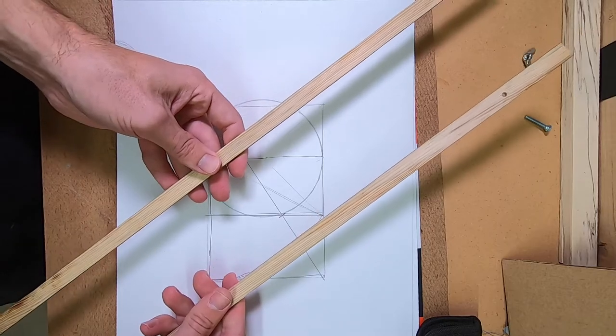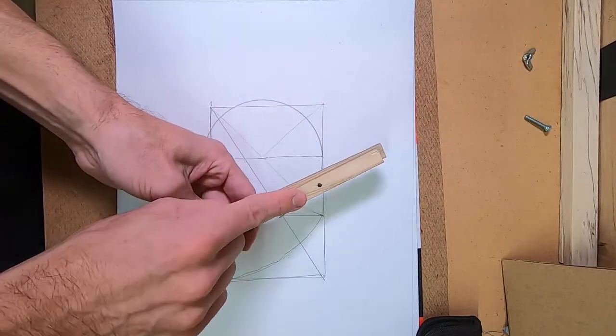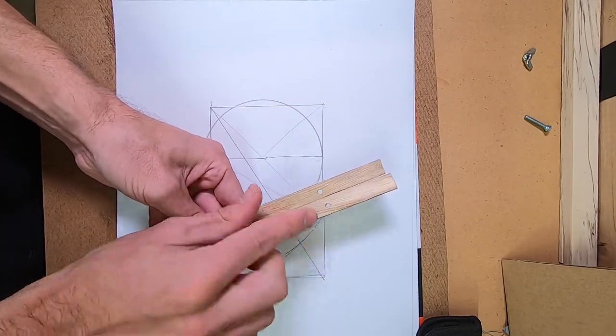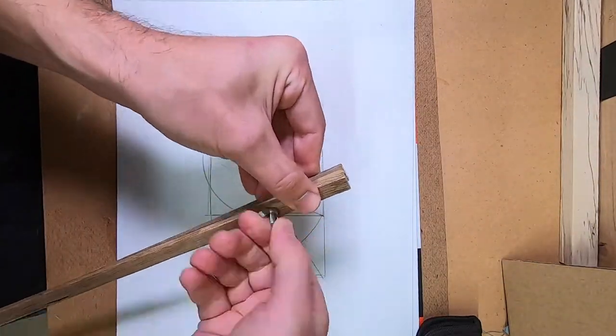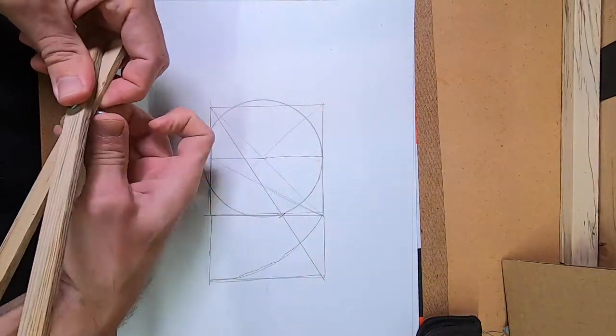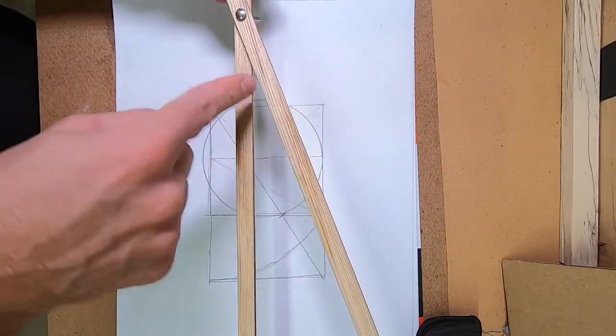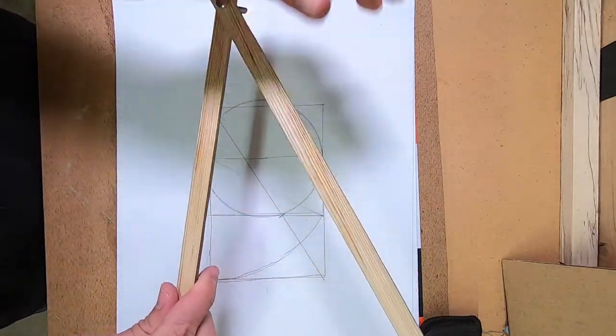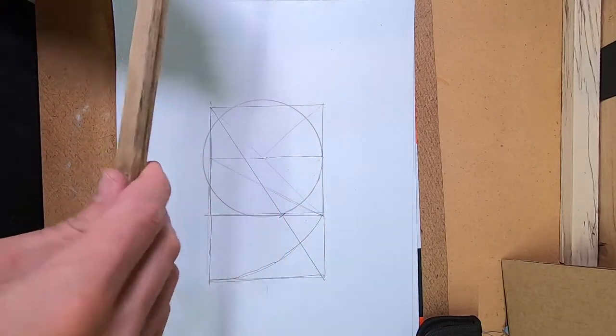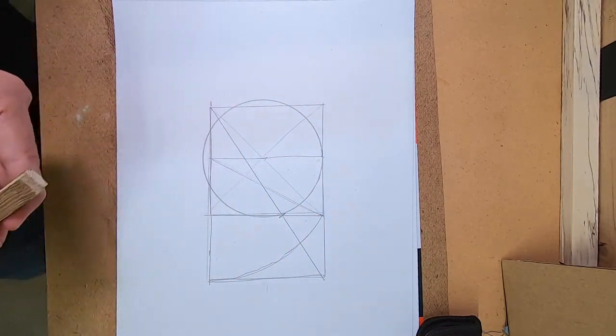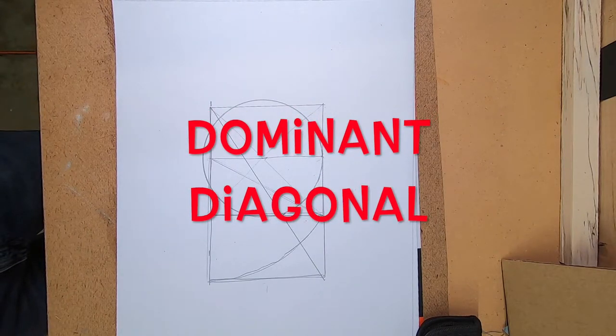And we also have our two straight sticks, which I've drilled a hole through each, which then can hold any angle. Which is really great for transferring and checking diagonals.